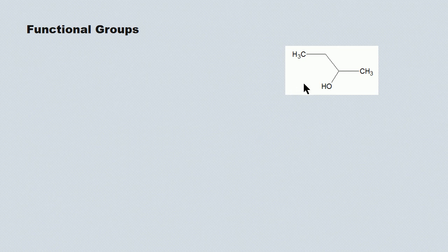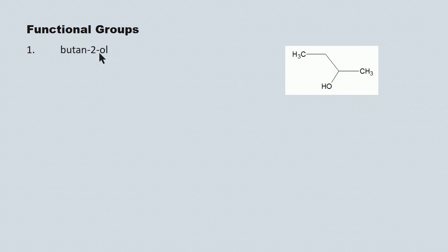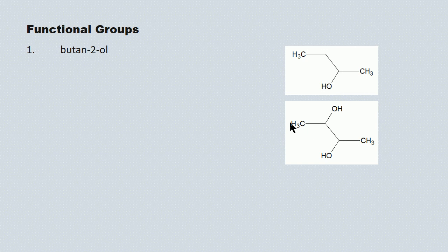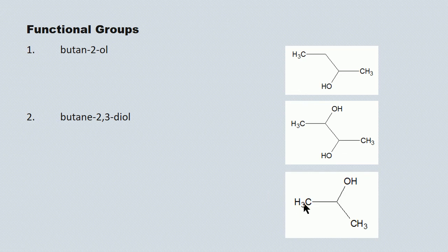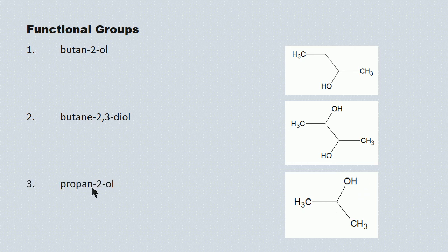Here are some naming examples. An alcohol with a hydroxyl group on a four-carbon chain, attached at the second carbon, is butan-2-ol — the E is dropped because the suffix starts with O. A four-carbon chain with two hydroxyl groups at the second and third carbons is butane-2,3-diol — here we don't drop the E because the suffix starts with D. A three-carbon chain with a hydroxyl at the second carbon is propan-2-ol, again dropping the E.